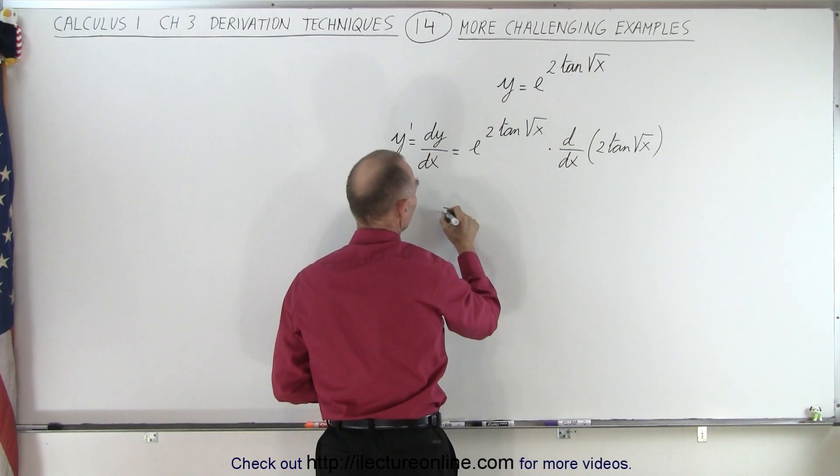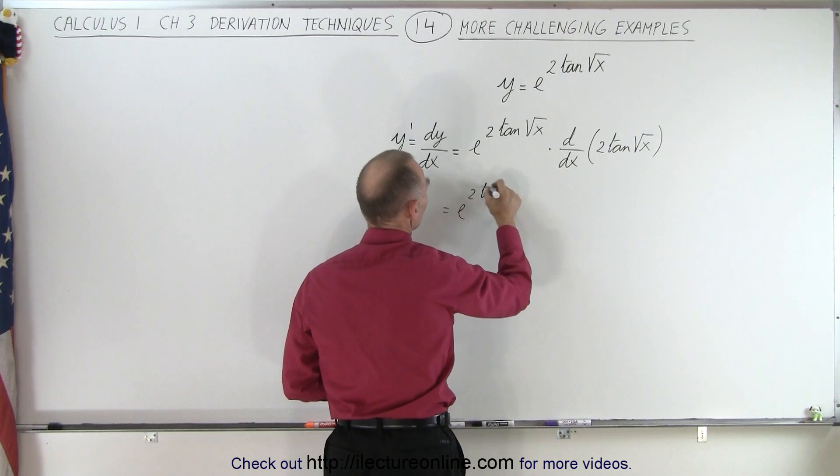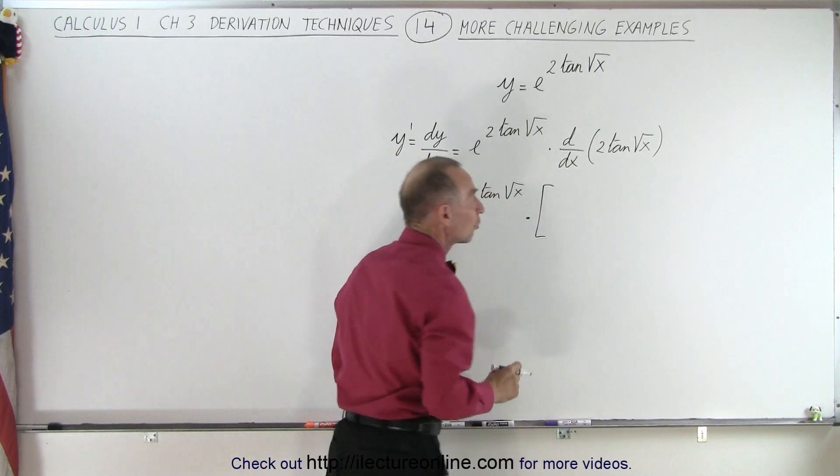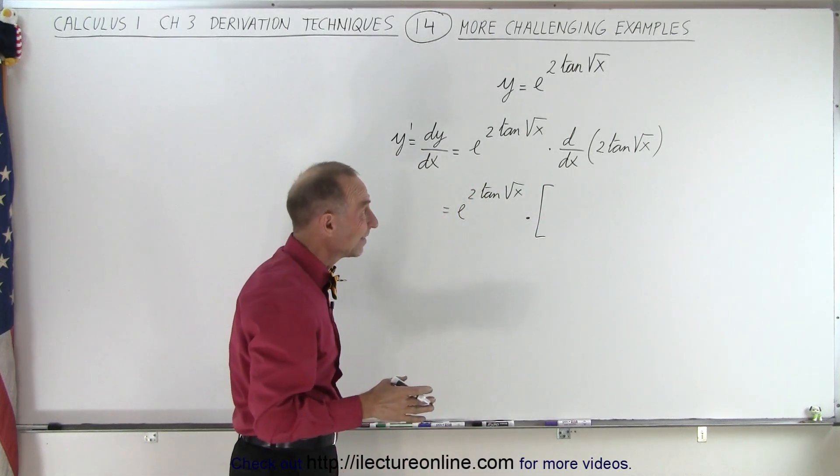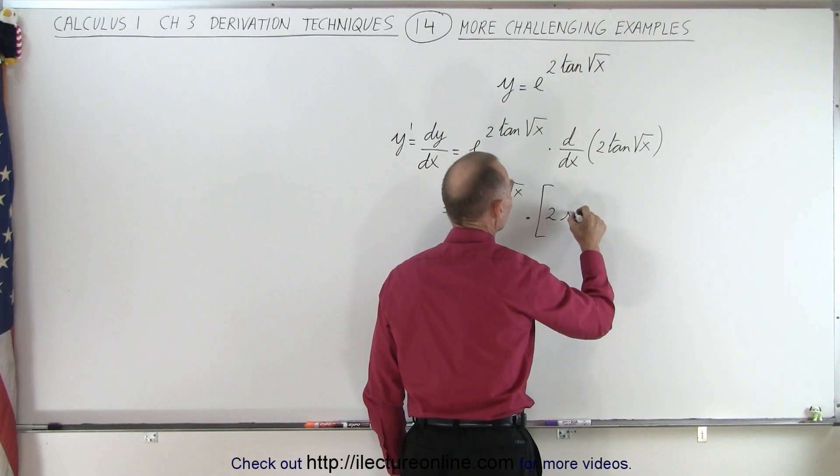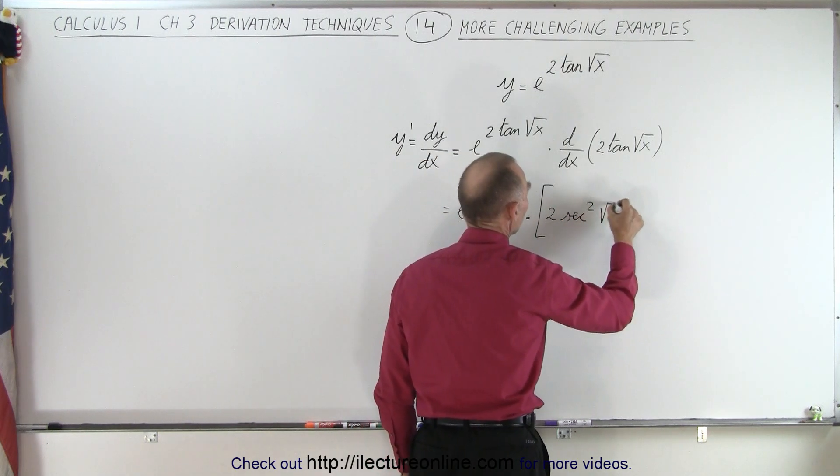Now, this becomes e to the 2 tangent of the square root of x times, now, the derivative of the tangent is the secant square. So this becomes 2 times the secant square of the square root of x.